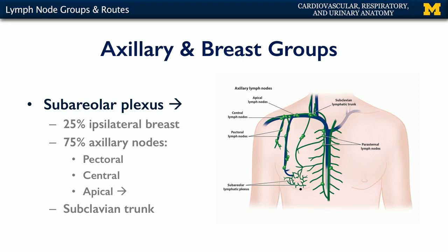We'll have an origin within the glandular epithelium of the breast that gets picked up by the subareolar plexus. There are really two directions that this material may go, so about one quarter of it is going to move.